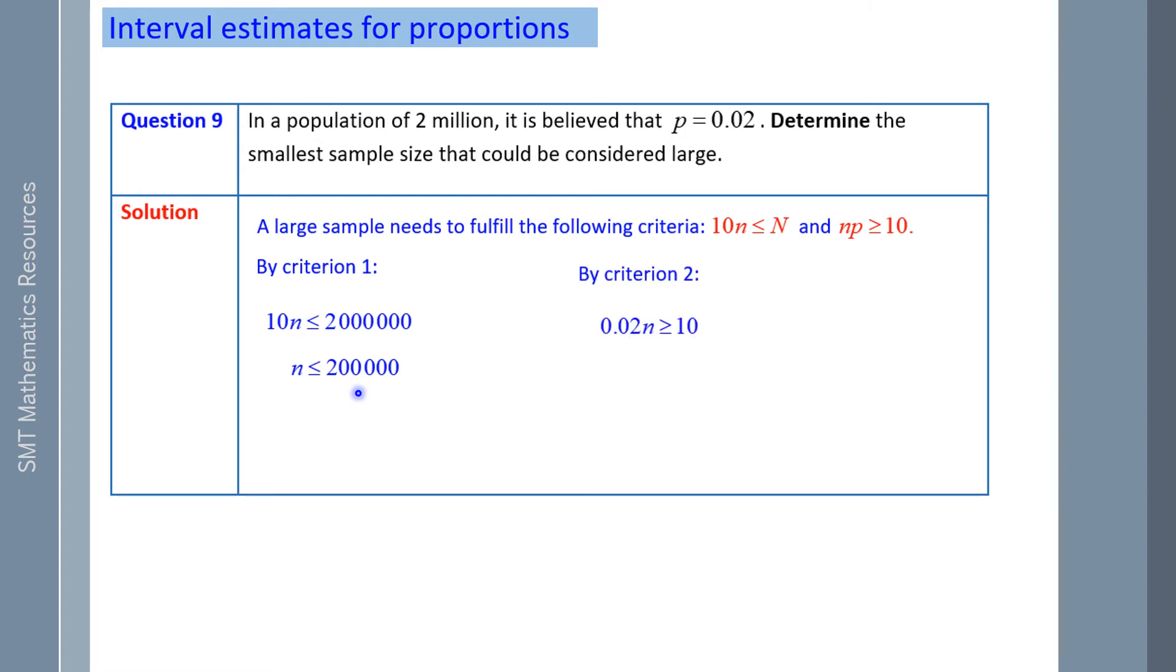By criterion 2, NP has to be greater than or equal to 10. So our P is 2% times what number will make us greater than or equal to 10. If we divide both sides by 0.02, N has to be greater than or equal to 500. That's our number we want. We need to have 500 or more. Therefore, the smallest sample size that could be considered large is 500.